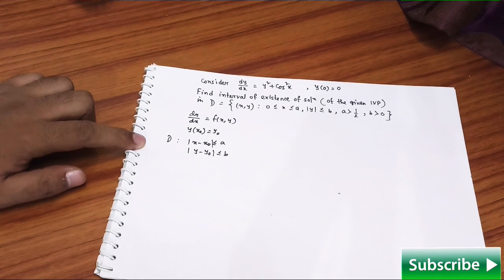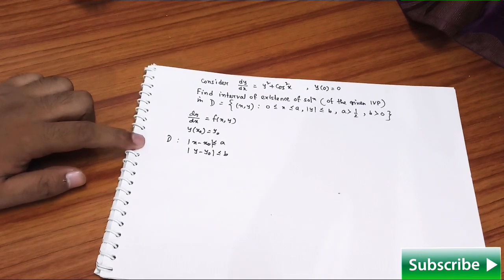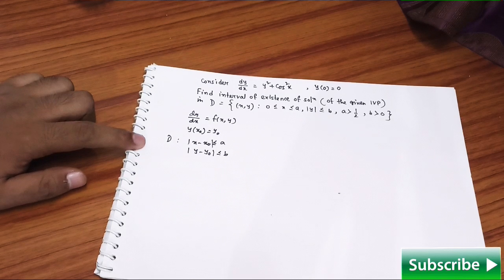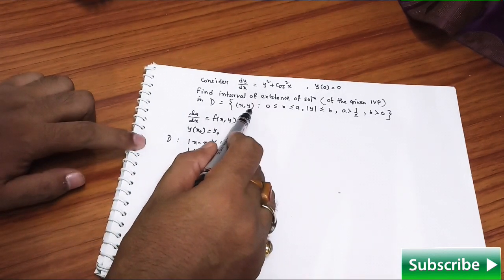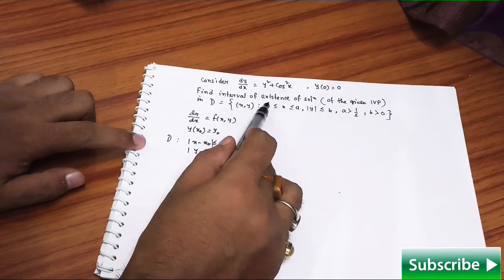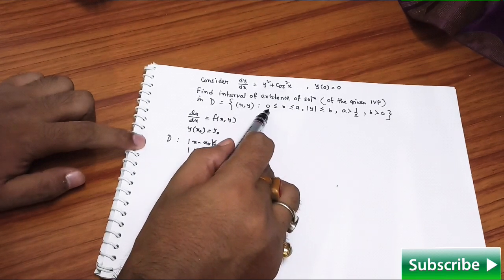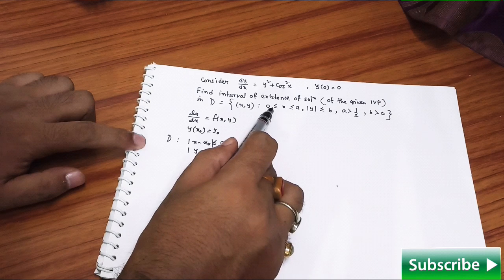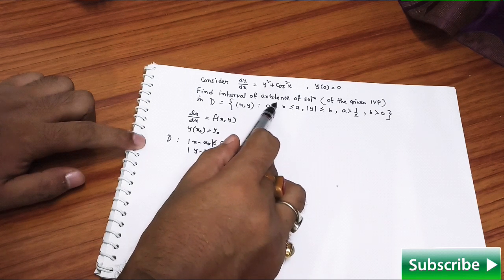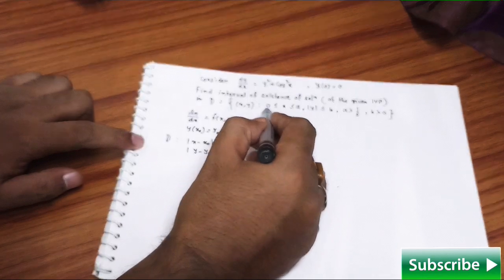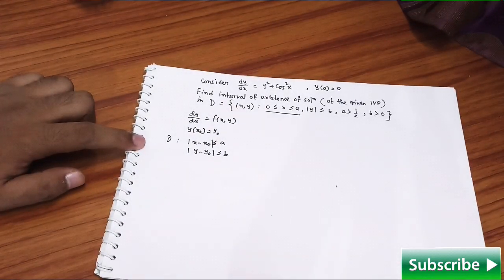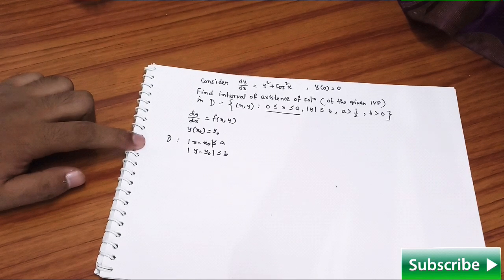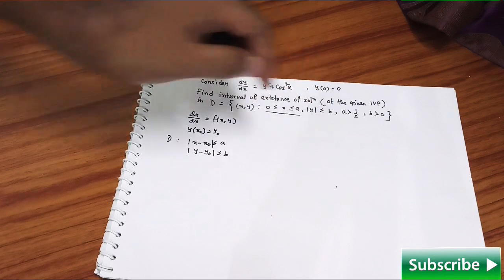But here they are providing the same thing in a different manner. Look at (x,y) such that x lies between this part - that means x is going to be strictly greater than 0 and it may be equal to 0. So there is some restriction for x, meaning the negative part is not going to be considered in the answer. And |y| ≤ b.